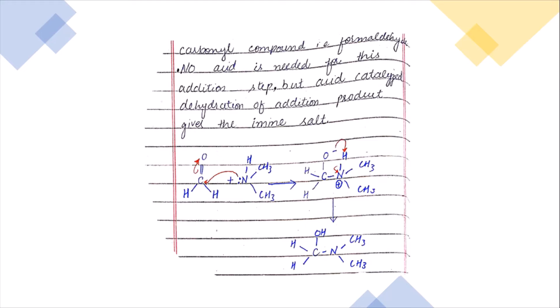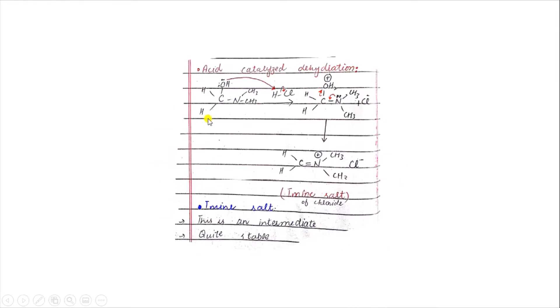The acid will act as a catalyst for the dehydration of the addition product, which we will see in the next step. The amino group attacks this carbon, and the electron density transfers toward the oxygen, giving an O-negative. Then there is a proton transfer — the H transfers to the oxygen, giving an OH at this position. The next step is the acid-catalyzed dehydration: the lone pair on the OH attacks the hydrogen and the electrons transfer toward the chlorine.